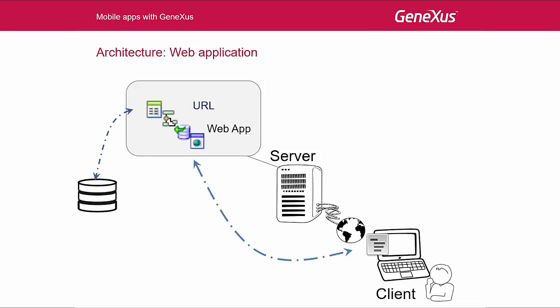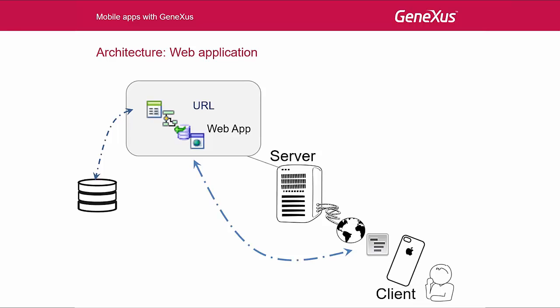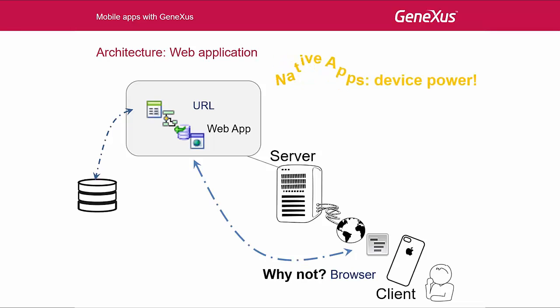If we want the application to run on a smart device, why should we implement a specific solution instead of doing it online through the browser of the device itself? We want the application to interact with the device's own features, such as the address book, calendar, and so on. Also, we want its look and feel to be similar to the other native applications, as we've seen before.